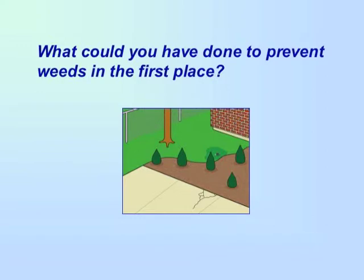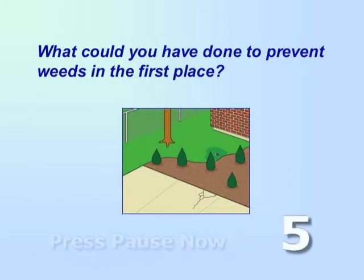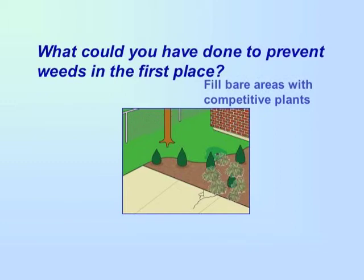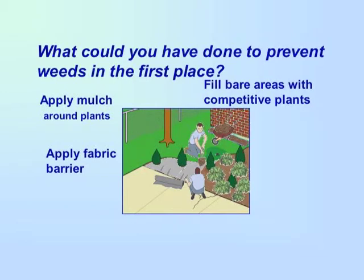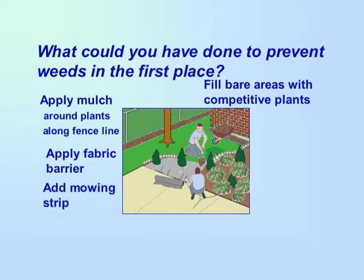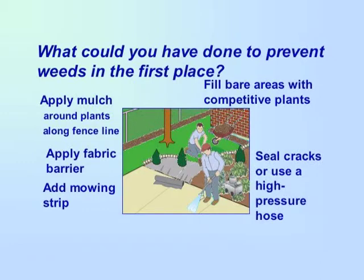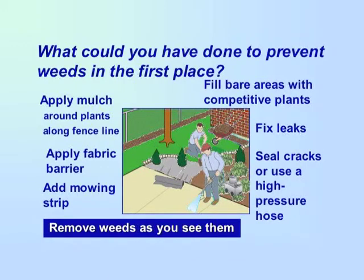What could you have done to prevent weeds in the first place? Fill bare areas with competitive plants and apply fabric barrier. Apply mulch on top of the fabric barrier around plants or place mulch along fence lines. Add a mowing strip between the lawn and landscape beds. Seal cracks or use a high pressure hose. And fix leaks. Continue to remove weeds as you see them, while they are still young and before they spread.